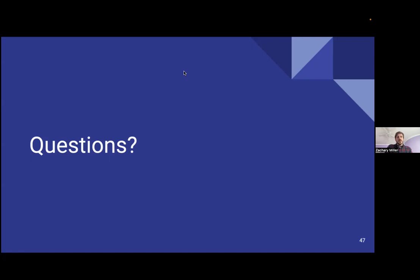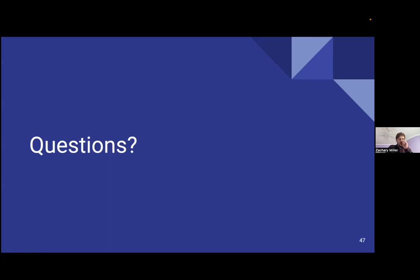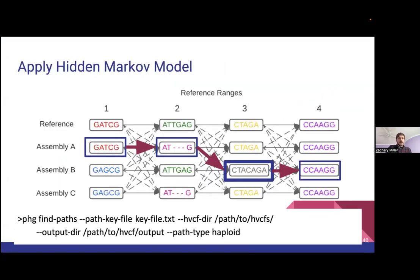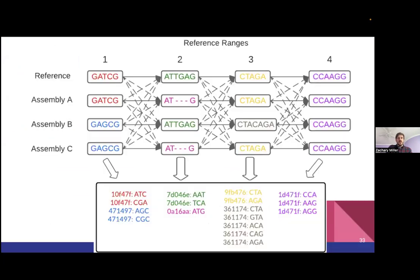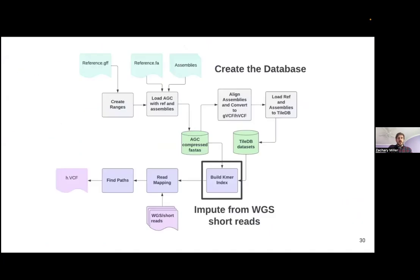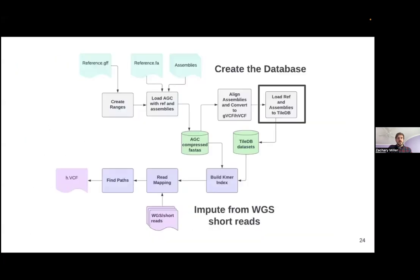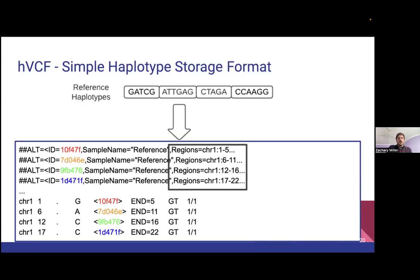What does the output graph look like? It's stored in a collection of these HVCF files. It can hold more than one sample — I only showed one for simplicity, but it's a VCF file so you can have more columns for each of your samples.